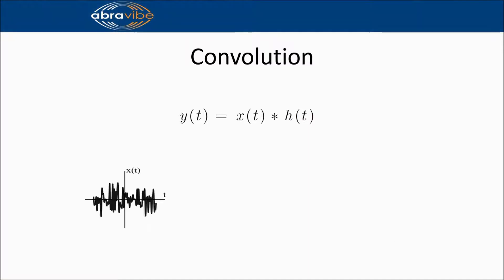x of t is an arbitrary time signal which is the input to the linear system. It can be, for example, the dynamic force acting on a structure.